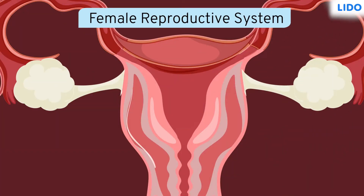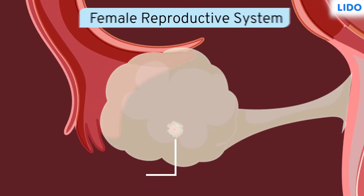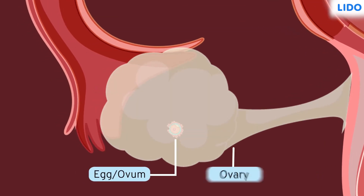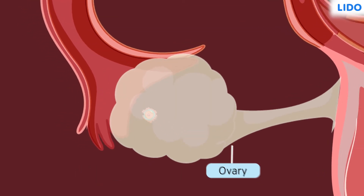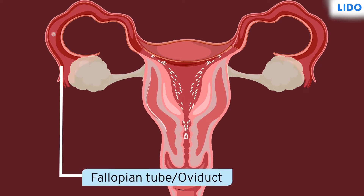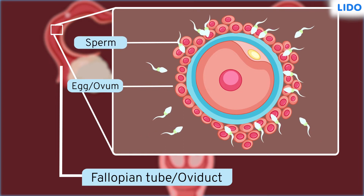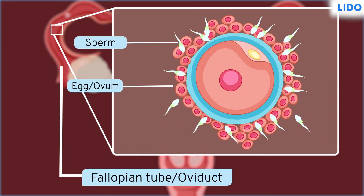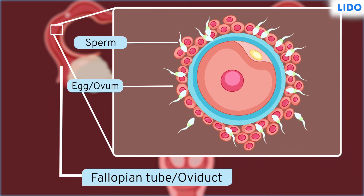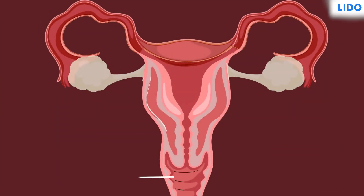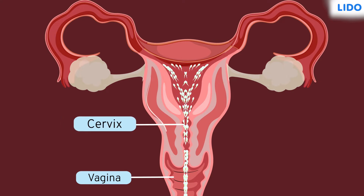In the female reproductive system, egg or ovum is produced in the ovary and released into the fallopian tube or oviduct. Here, ovum gets fused with the sperm which enters the vagina of the female reproductive tract during copulation. From the vagina, millions of sperm pass through the opening of the cervix and travel into the fallopian tubes.